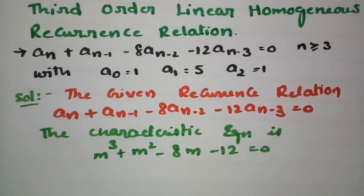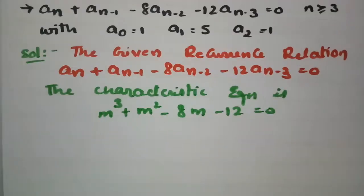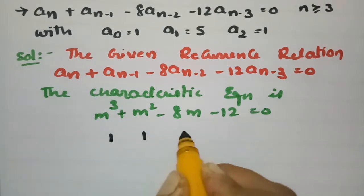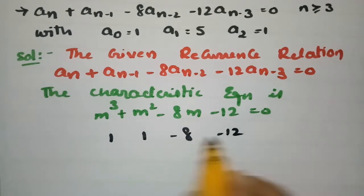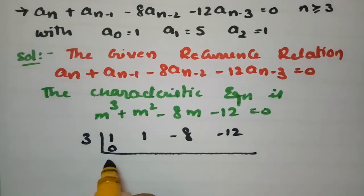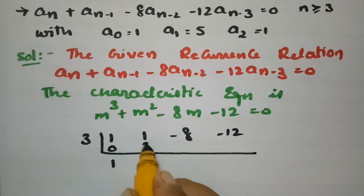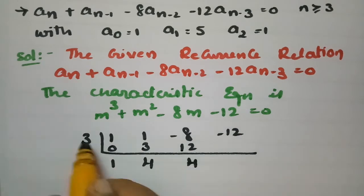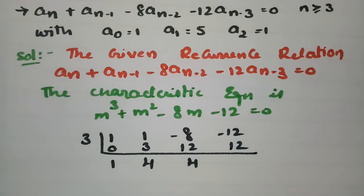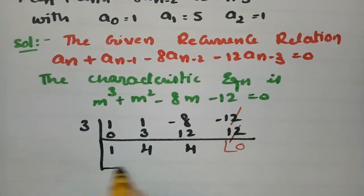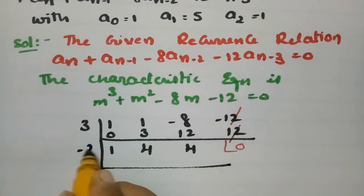Now we have to find the factors. For finding the factors, the coefficients are: for m^3 it is 1, for m^2 it is 1, for m it is minus 8, and the constant is minus 12. I am going to check with 3 first.